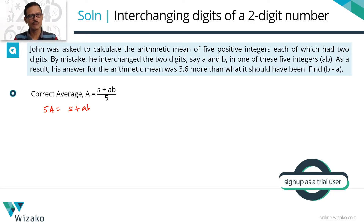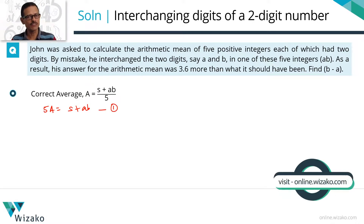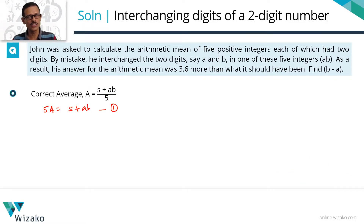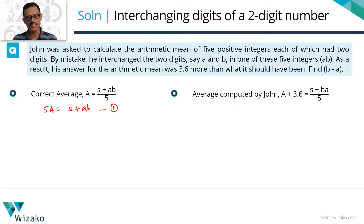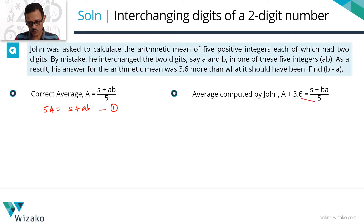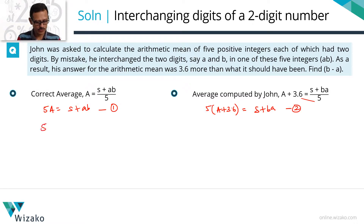S plus AB is the sum of the four correct numbers plus AB written in the right order — that's Equation 1. Now framing Equation 2 for the way John computed the average: he added S to BA and divided by 5, giving A plus 3.6 = (S + BA) / 5. Cross-multiplying: 5A + 18 = S + BA. That is Equation 2.